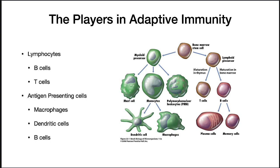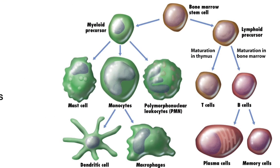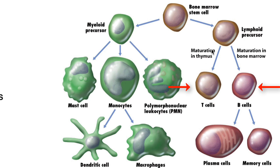The players in the adaptive immunity are lymphocytes, and these are made from bone marrow stem cells. Cytokines help to cause the differentiation into a lymphoid precursor cell, and then more cytokines either direct it towards a T cell or a B cell. T cells mature in the thymus, and B cells mature in the bone marrow.